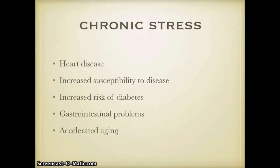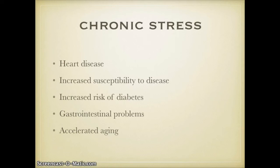When you're undergoing chronic stress — always under stress constantly — it can lead to heart disease, increased susceptibility to disease, increased risk of diabetes, gastrointestinal problems, and accelerated aging. The constant increased heart rate can cause damage to your heart if prolonged. Your suppressed immune system makes you more likely to get sick. Elevated insulin from increased cortisol raises the risk of diabetes. Suppression of your digestive system can cause gastrointestinal problems, and increased oxidative stress in your cells from increased oxygen contributes to accelerated aging.